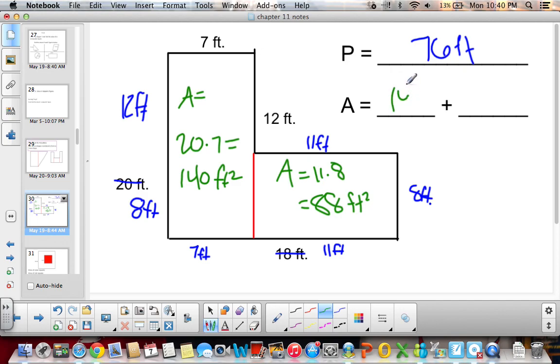And then we add them together. So 140 plus 88. Now 140 plus 60 is 200, and then that tells me that I have 28 left. So it's going to be 228 feet squared. See how I took the area of the rectangle, the area of the other rectangle, and you add them together.